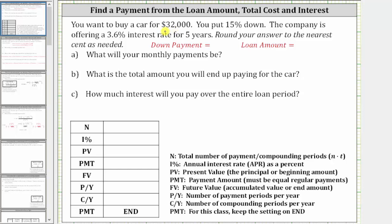You want to buy a car for $32,000. You put 15% down. The company is offering a 3.6% interest rate for five years. What will your monthly payments be? What is the total amount you will end up paying for the car? And how much interest will you pay over the entire loan period?